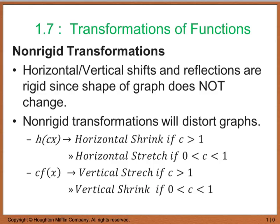The last topic in Section 1.7 deals with non-rigid transformations. The horizontal and vertical shifts and the reflections we looked at earlier are all considered rigid — the actual shape of the parent function graph does not change. With non-rigid transformations, these are going to distort that parent function. Ways to distort it include putting a scalar inside with x: if we do h of 3x, since 3 is greater than 1, that gives us a horizontal shrink. Likewise, if the value of c is between 0 and 1 — a fraction like 3 fourths, 1 half, 2 thirds — that gives a horizontal stretch.